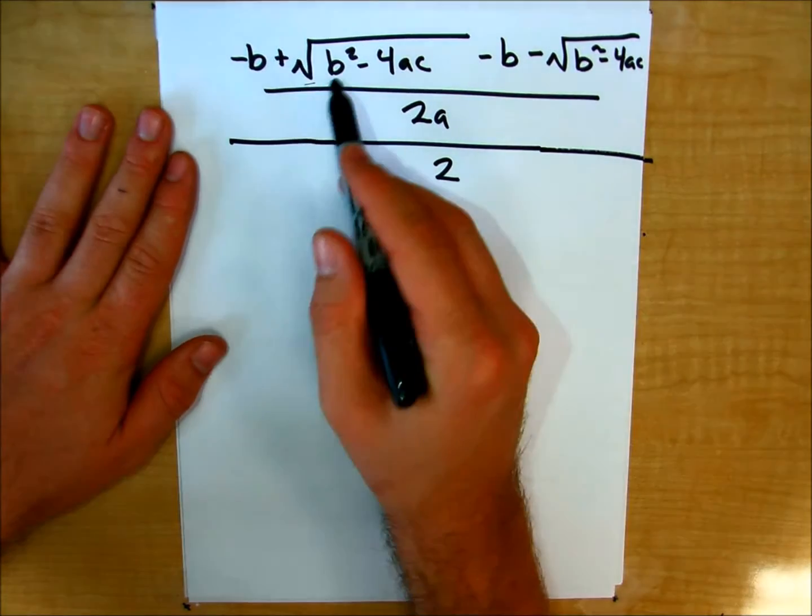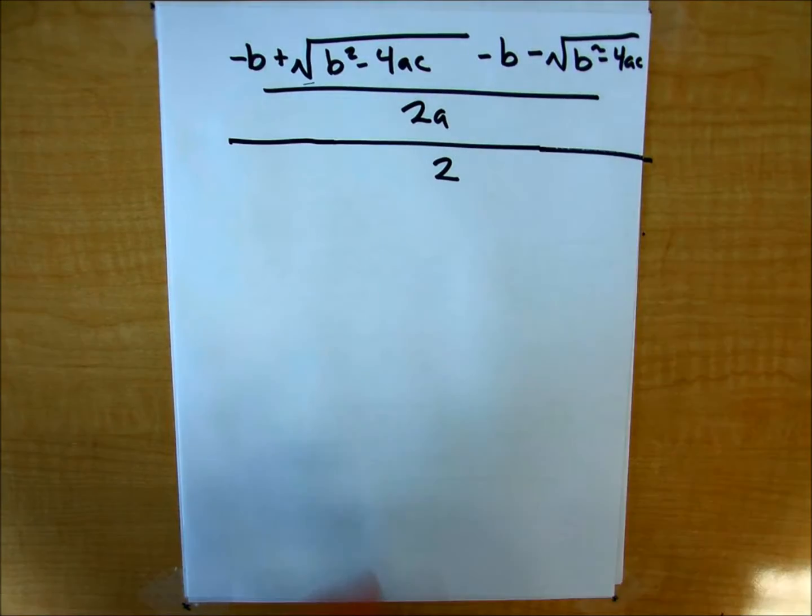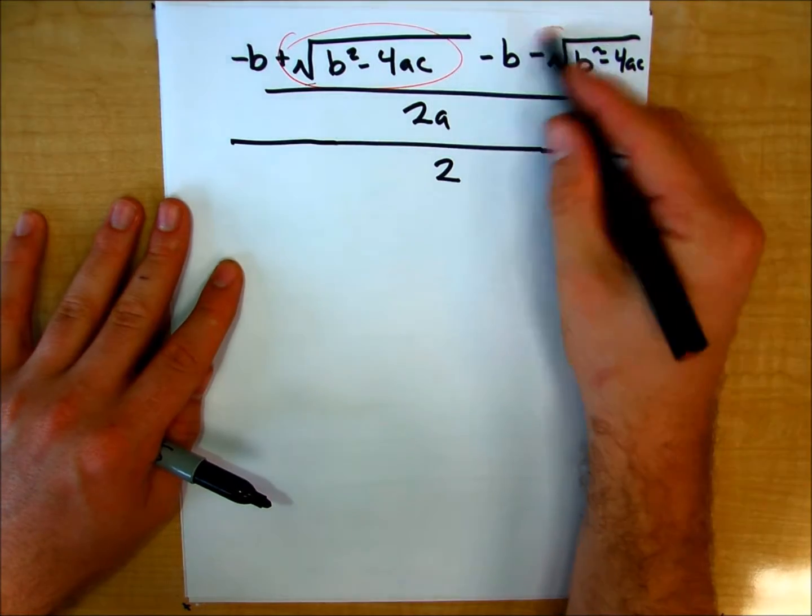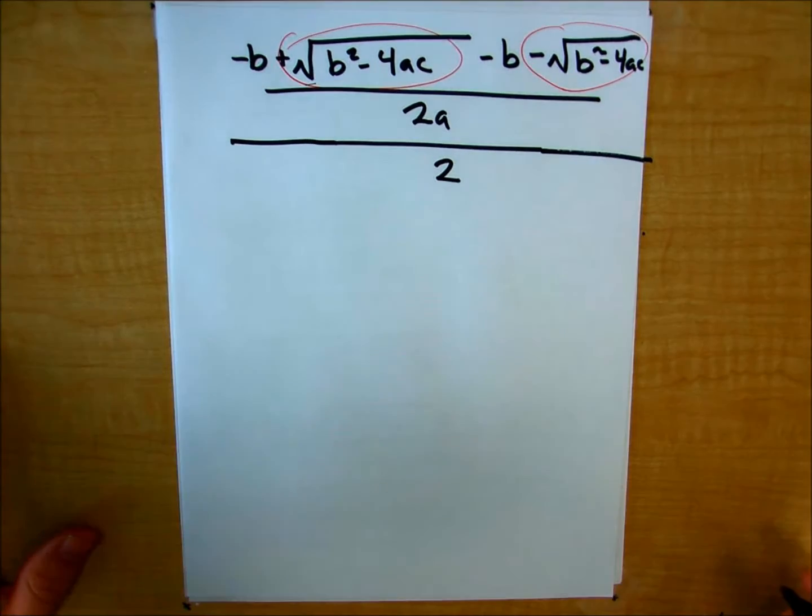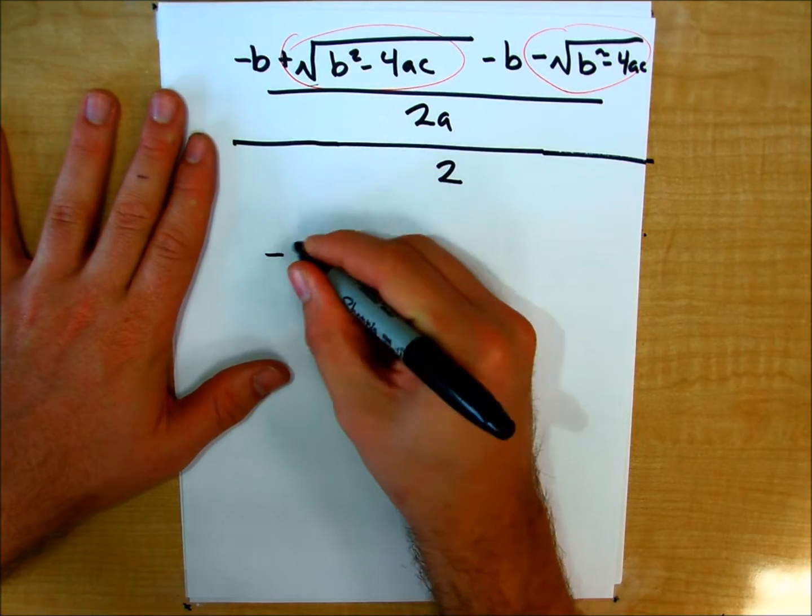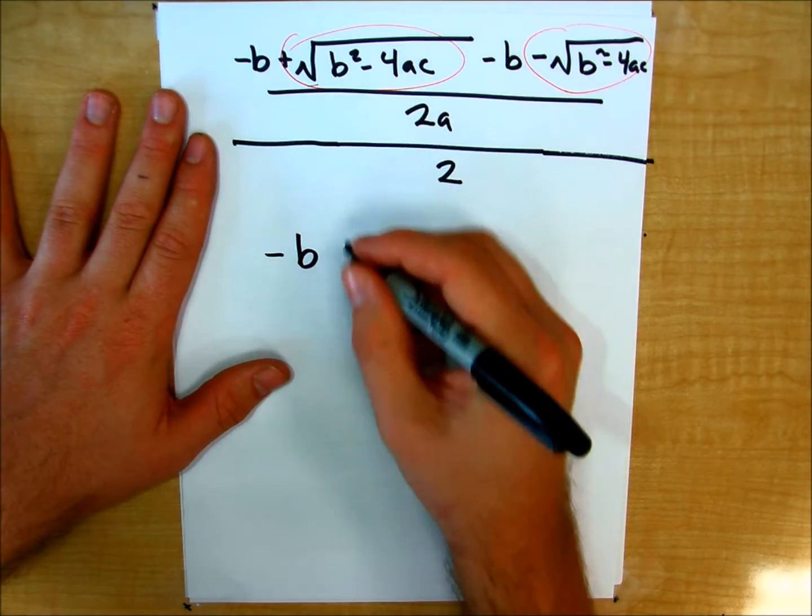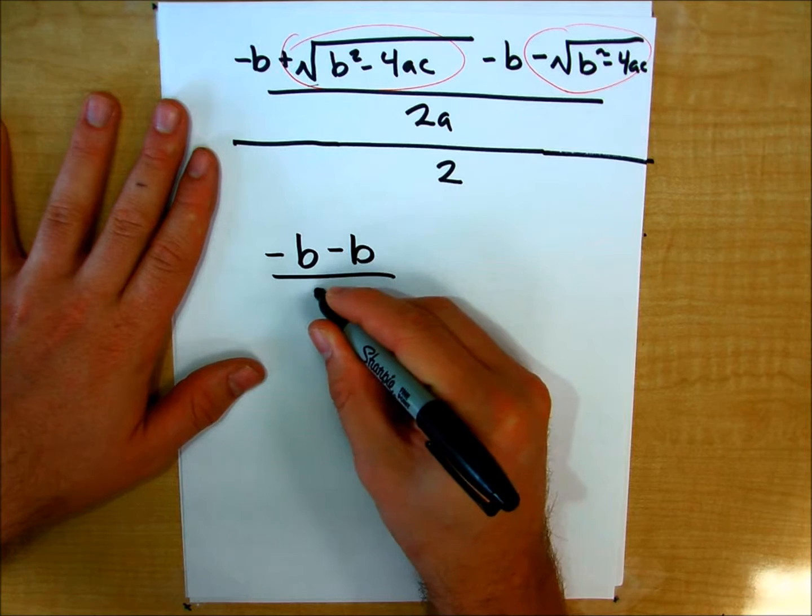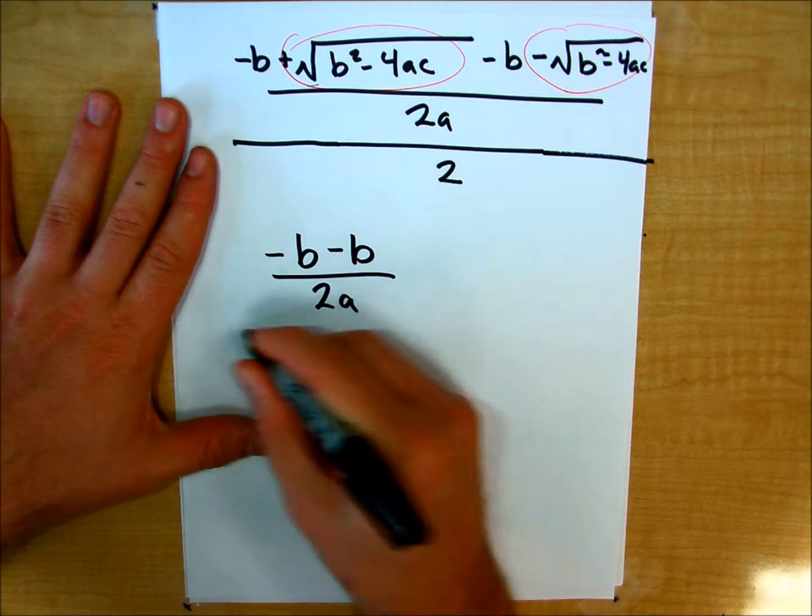So I notice here that I have a positive square root of b squared minus 4ac and a negative square root of b squared minus 4ac. So I can get rid of those. And I can say, negative b minus b over 2a all divided by 2.